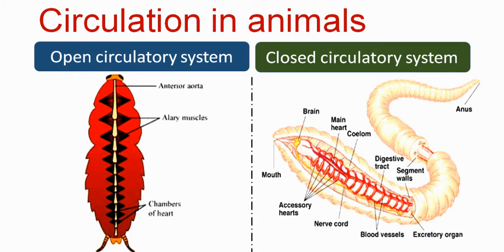Examples of the open circulatory system come from phylum Arthropoda and Mollusca. In the open circulatory system, blood is present partly in blood vessels, partly in the body cavity, and partly in the heart if a heart is present.